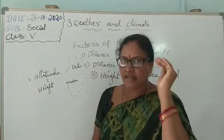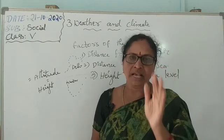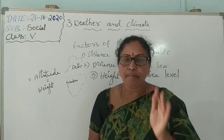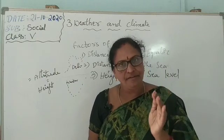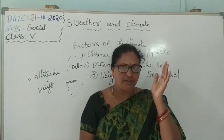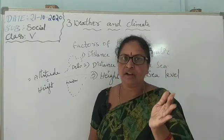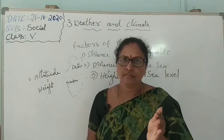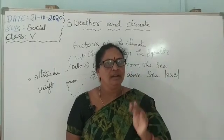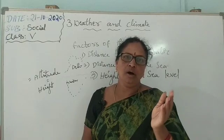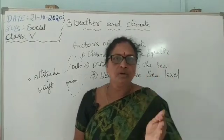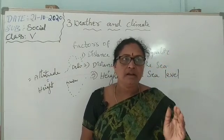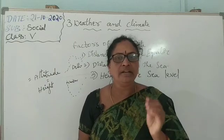When the altitude of a place increases, the temperature of that place decreases. Hill stations such as Shimla, Darjeeling, Nainital, Mussoorie, and Kulmani are situated in the hills, which are very high places. They experience a very cool climate even in summer.